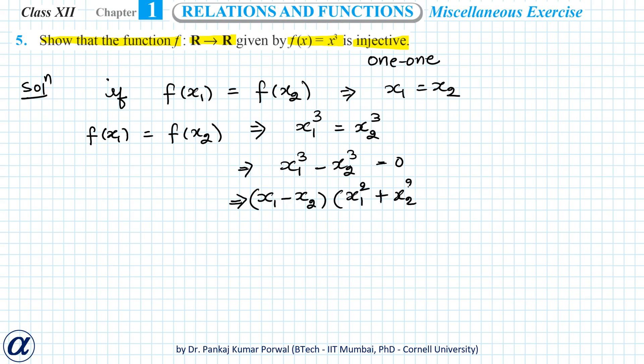plus x₂² plus x₁x₂) equals zero. And here this factor is always positive, so x₁ minus x₂ will have to be zero. So this implies x₁ minus x₂ equals zero, and that implies x₁ equals x₂.